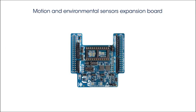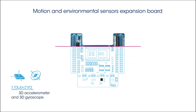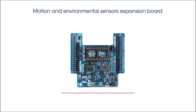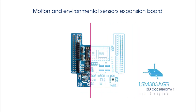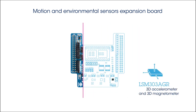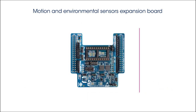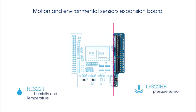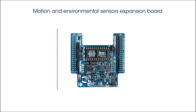This board includes a variety of MEMS-based components: an inertial module composed of a 3D MEMS accelerometer and a 3D MEMS gyroscope, a MEMS-based combination 3D accelerometer and 3D magnetometer, and a MEMS pressure sensor and a relative humidity and temperature sensor.